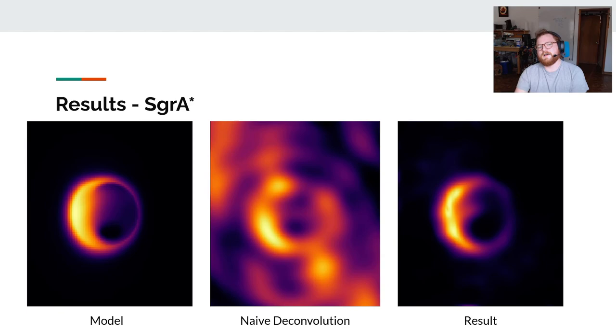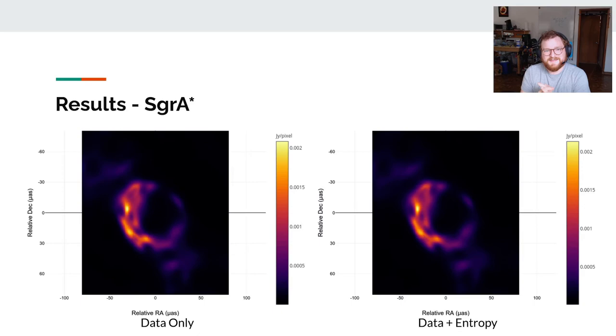So here's some results of Sagittarius A, a popular model of Sag A. And if you just put zeros on all the things you don't know, you get this naive deconvolution in the middle, which doesn't look great. And then we get our nice maximum entropy reconstruction on the right.